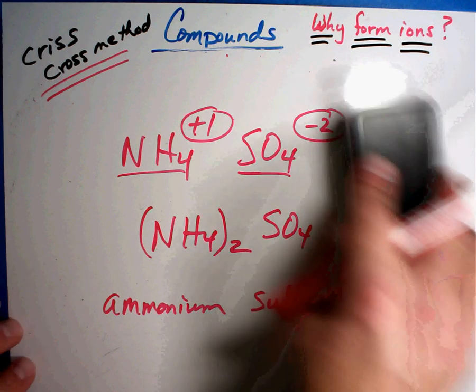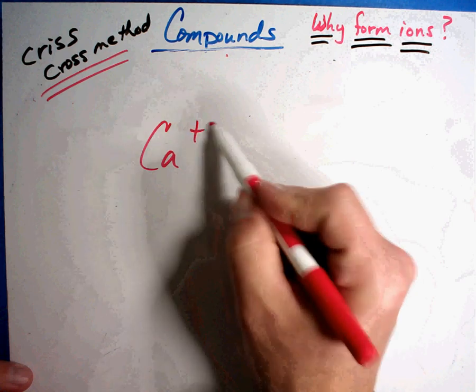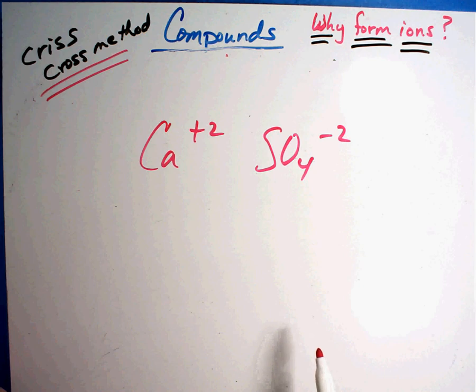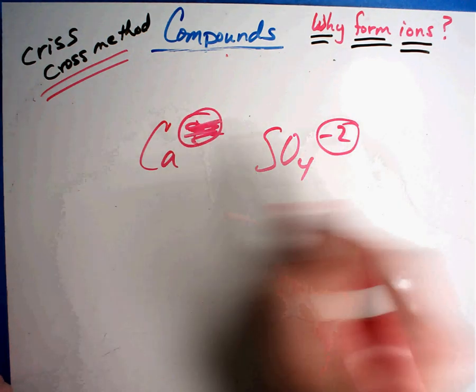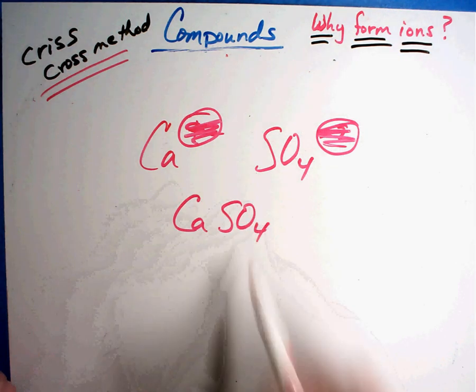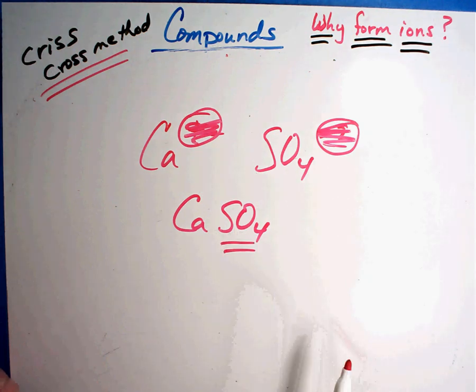What would you do if you had this one? Ca plus 2, SO₄ minus 2. Do they equal zero? Yeah. Mark them out. Your answer is CaSO₄, calcium sulfate. They'll tell you that word. Let's see if you can get a couple of these on your own.